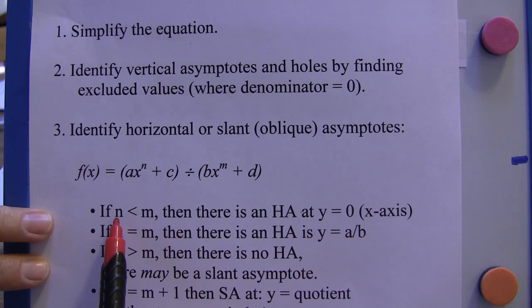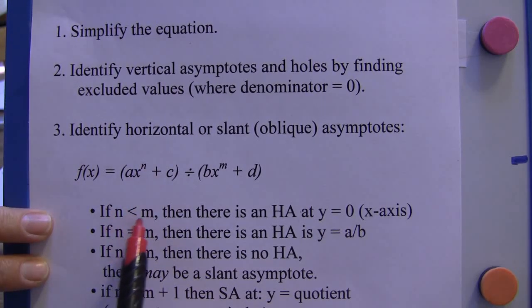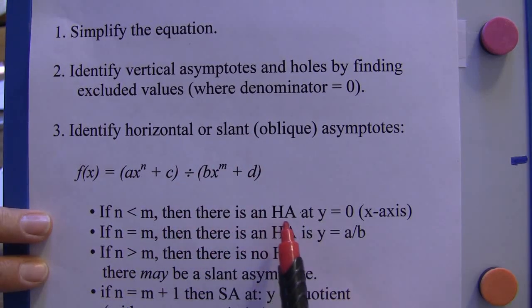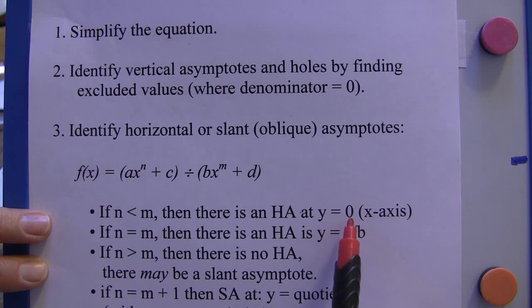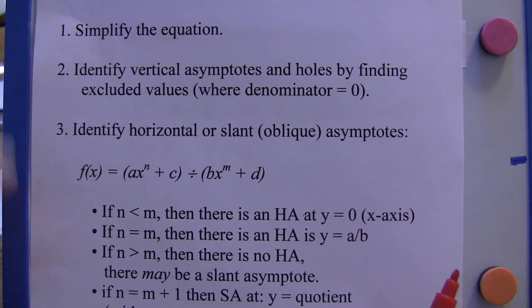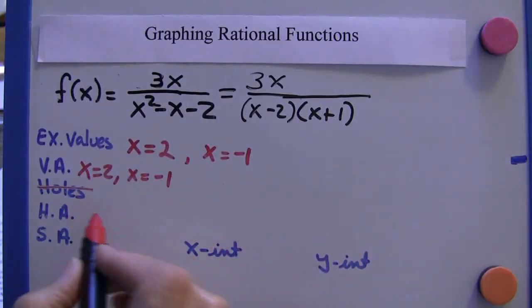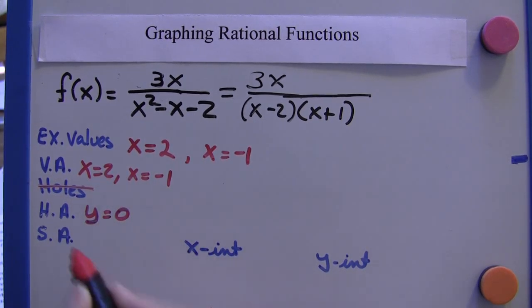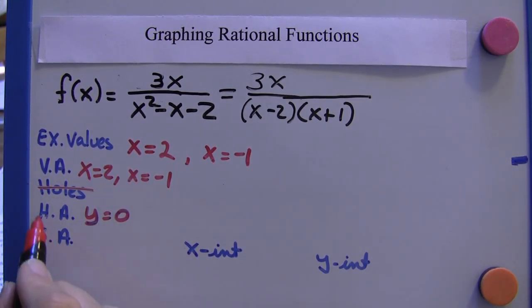Therefore, there is a horizontal asymptote at y equals 0, or along the x-axis. So there's a horizontal asymptote, y equals 0. There's no slant asymptote. If you have a horizontal asymptote, you won't have a slant asymptote.